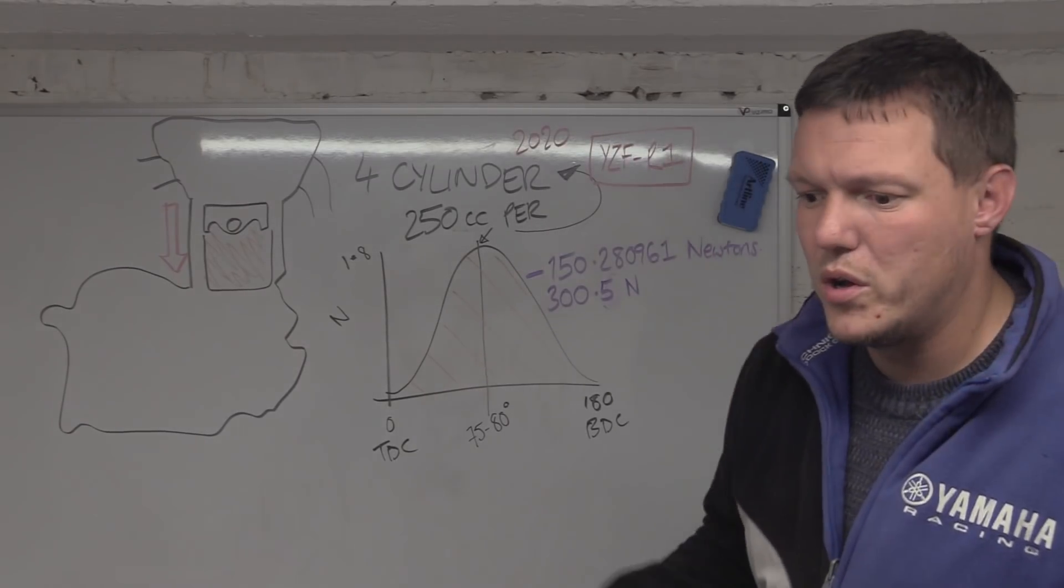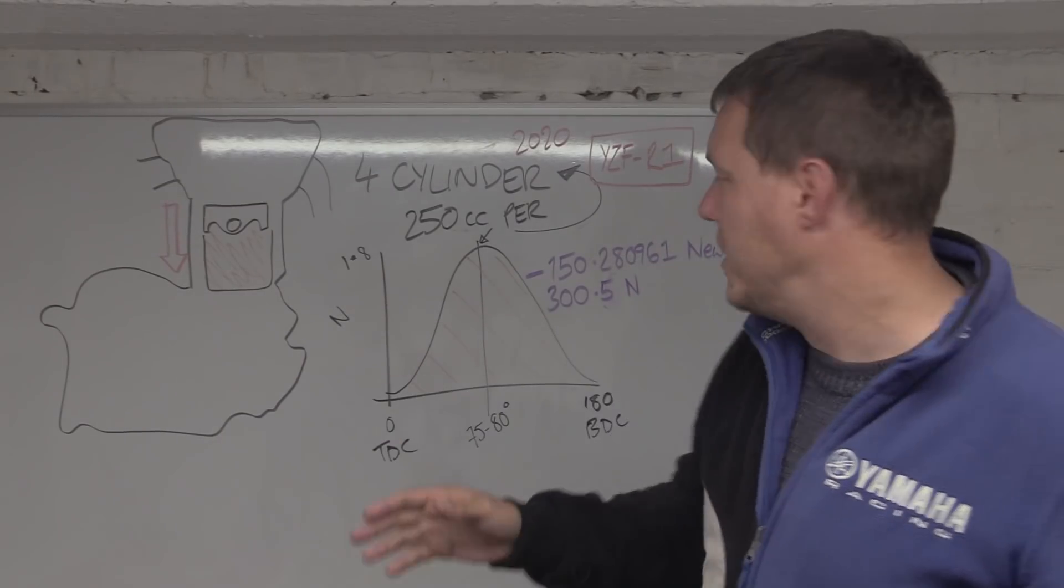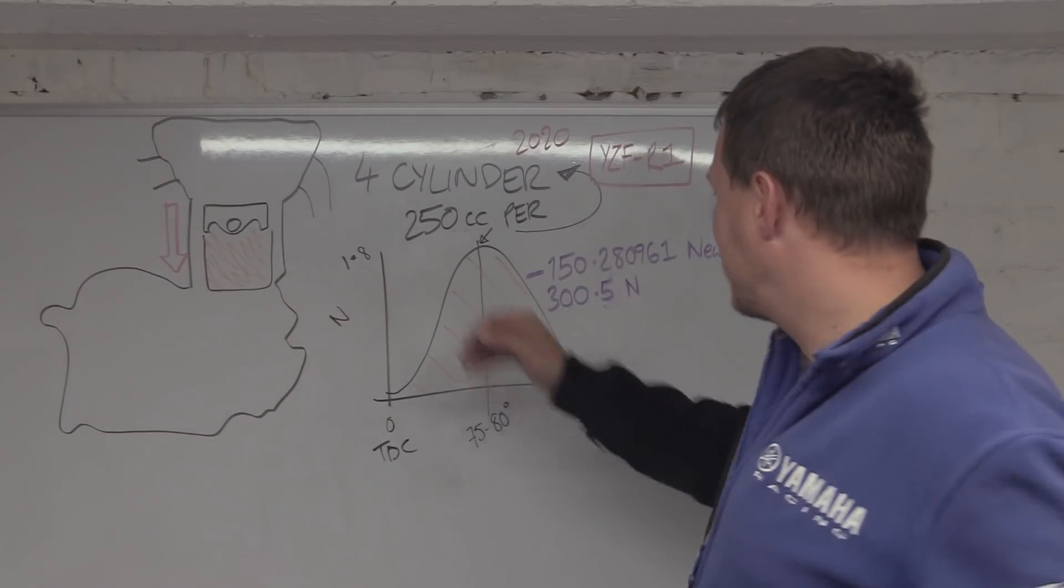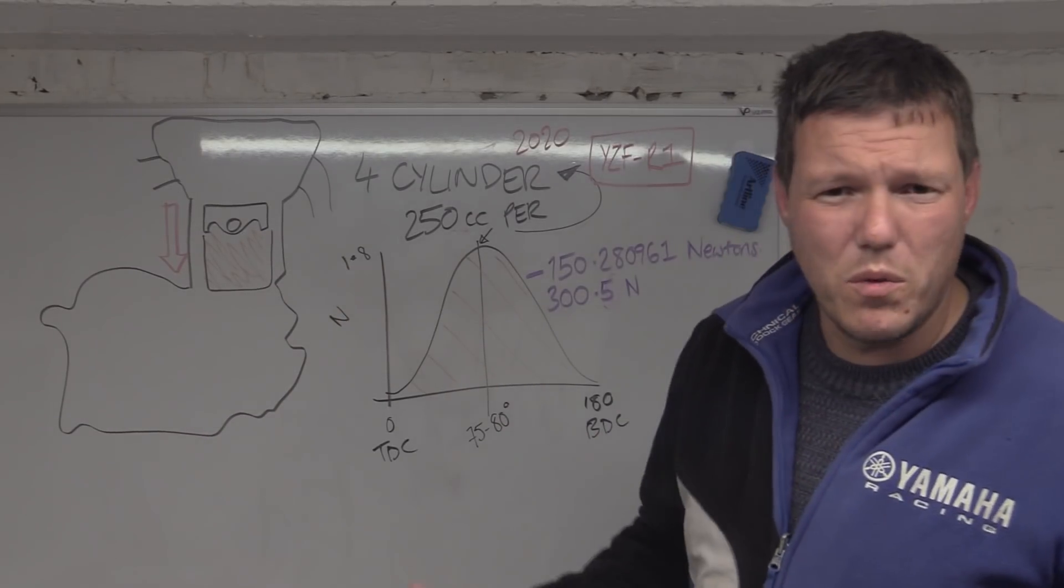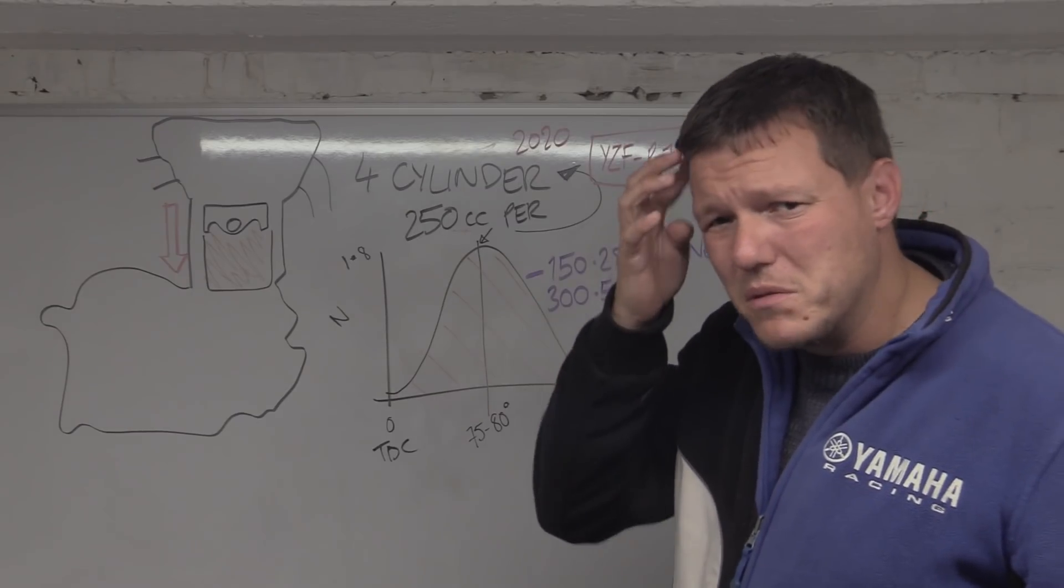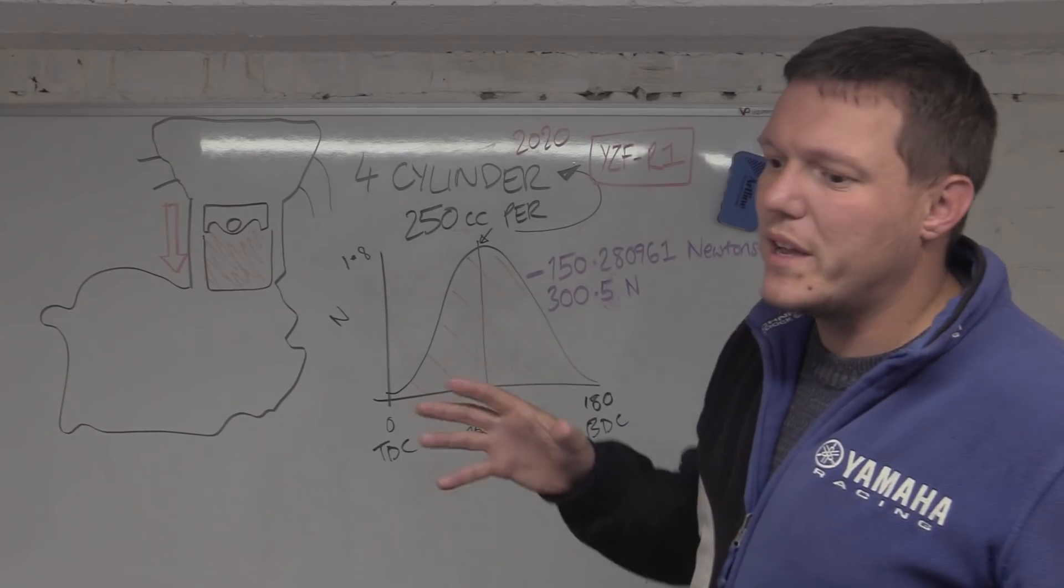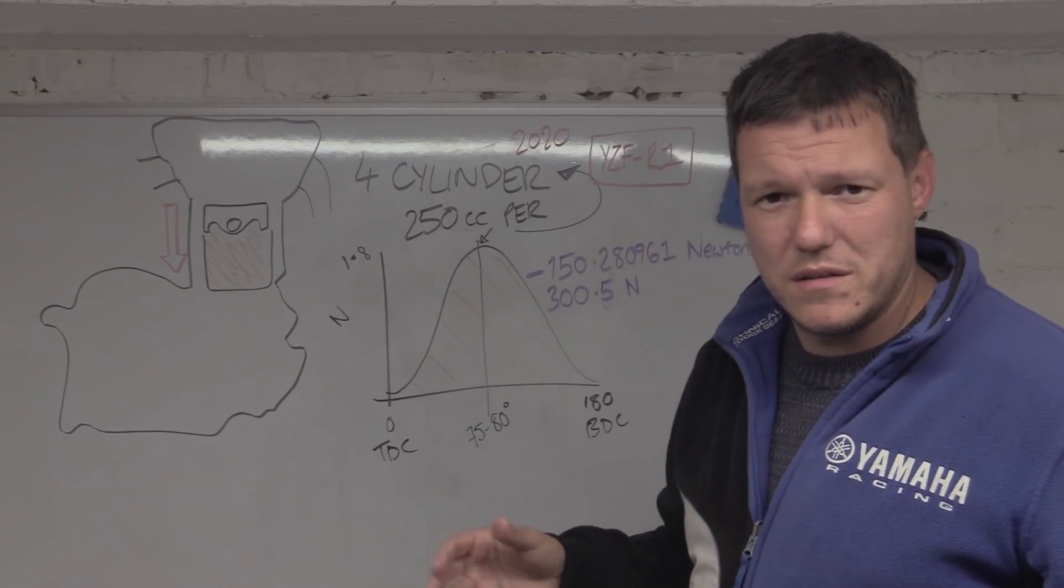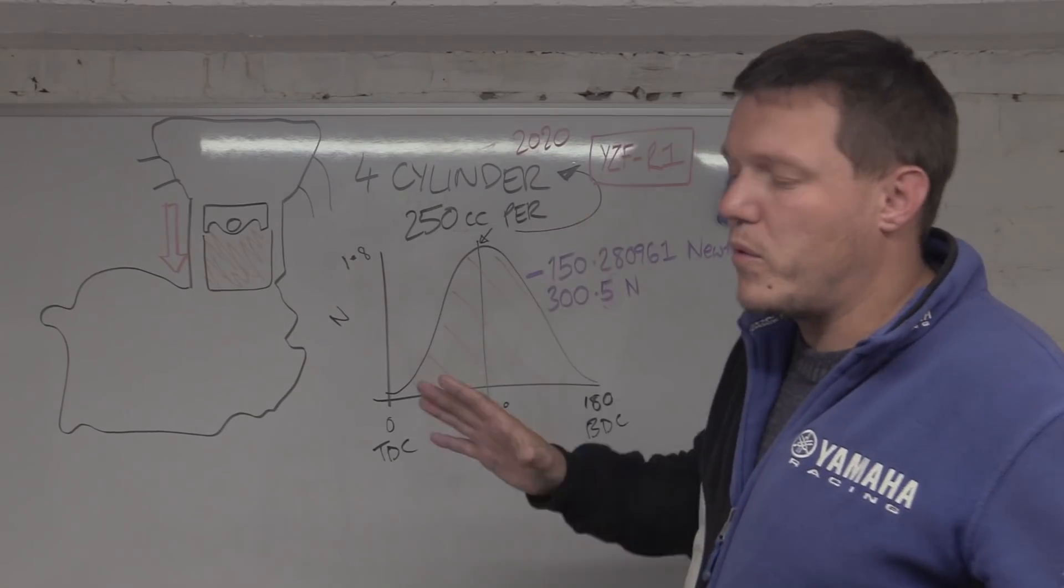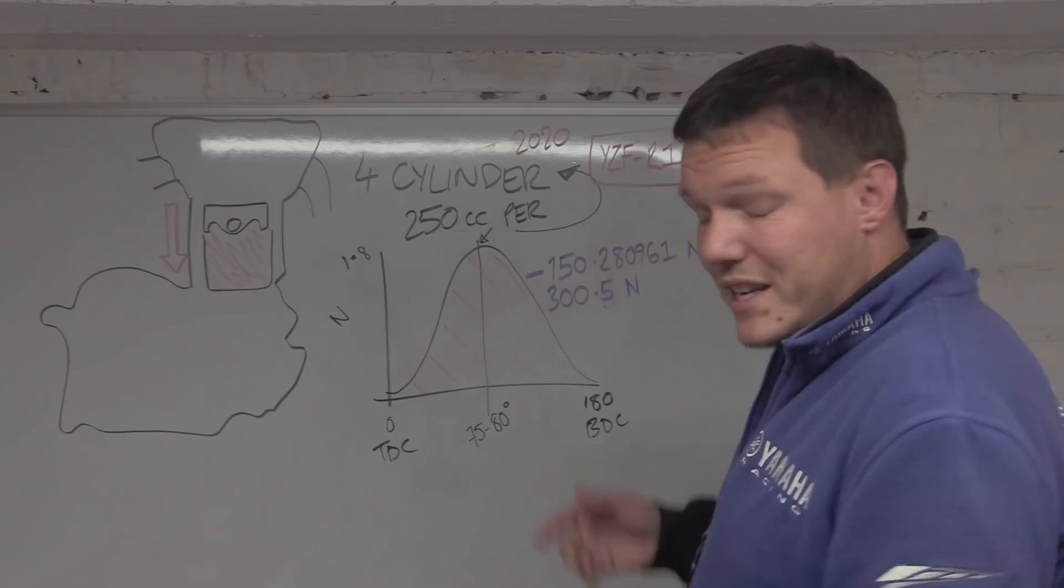300.5 newtons per four cycles. Now there's four cylinders and you might go, oh well there's four cylinders, times that by four, so you're getting up to 1.2 kilonewtons, this is getting quite big. However, we only have to work out for the four cycles for each individual cylinder.